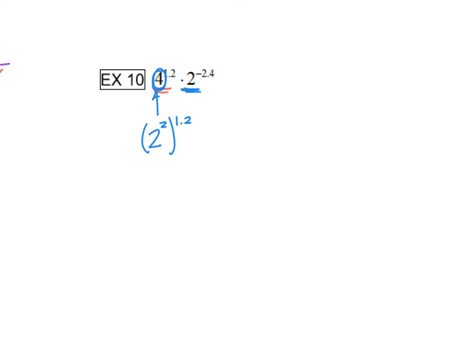So all that we're doing is we're manipulating it so that we can simplify it with this number off to the side. Those bases need to be the same. So we can rewrite 4 as 2 squared. That 1.2 came down. Now we would go ahead and multiply 2 times 1.2, so we have 2 raised to the 2.4 power times I'm going to bring down the rest of the problem 2 raised to the negative 2.4 power.